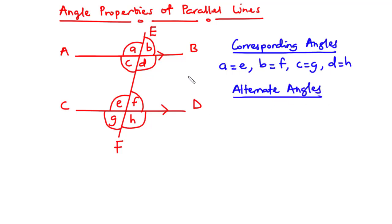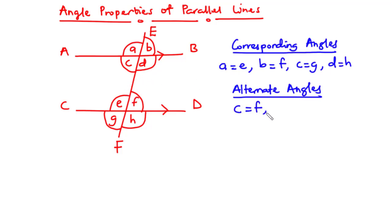Alternate angles are also said to be equal. The lines give rise to a Z-shape or zigzag shape. Angle C alternates with angle F, and angle D alternates with angle E. Therefore, C is equal to F and D is equal to E.